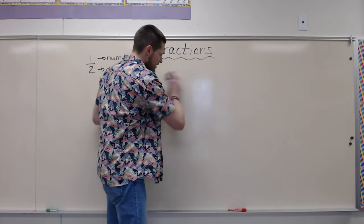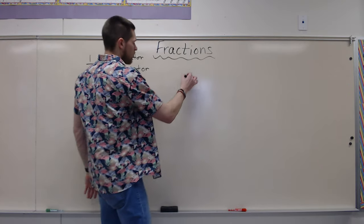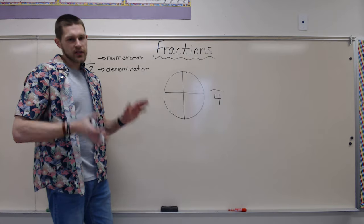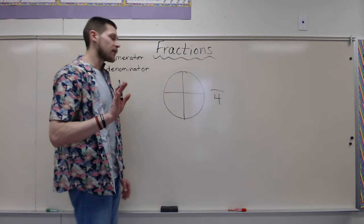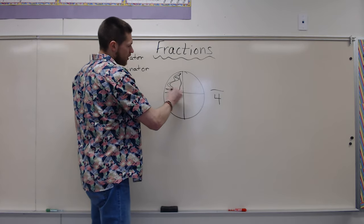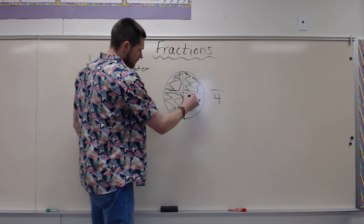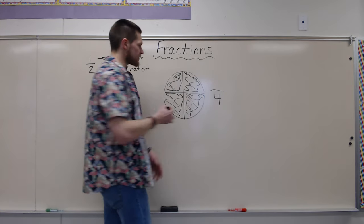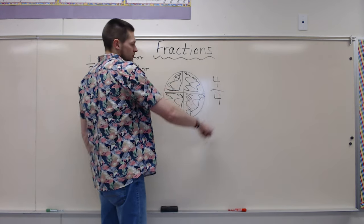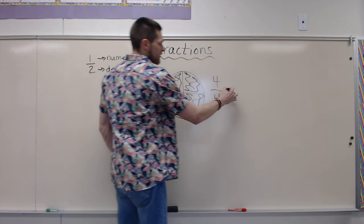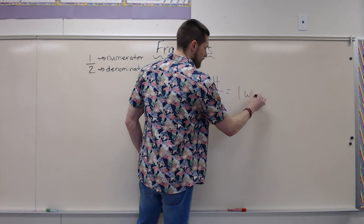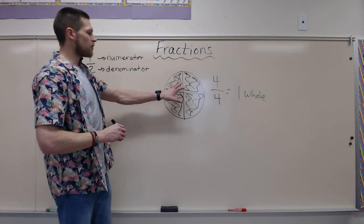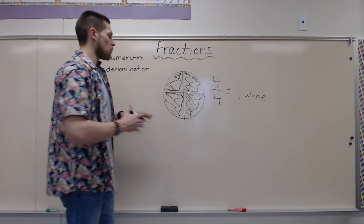Now let's say I'm being super generous one day with my whole cake. I'm still breaking it up into four different sections, but I'm going to give my entire cake away — I'm feeling really generous that day. So I'm coloring in all my pieces here. As you can see, I colored in one, two, three, four — the entire thing. The part I'm giving away is four-fourths, which is also equal to one whole. Like I said at the beginning, this entire cake is representing one whole — one giant cake.